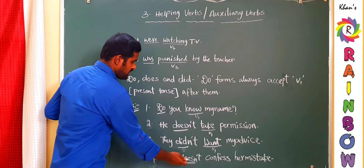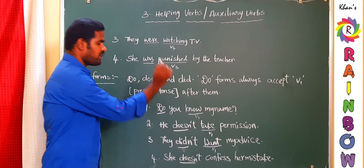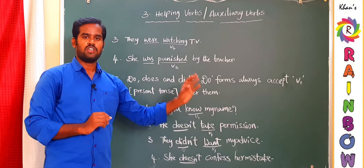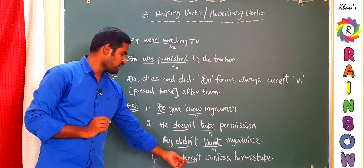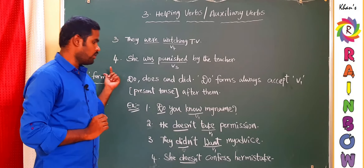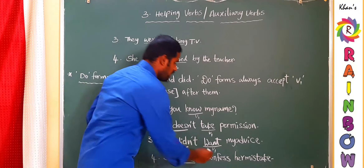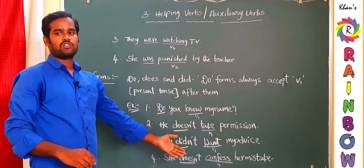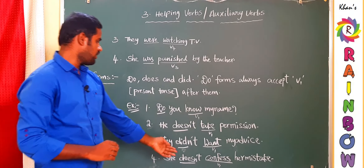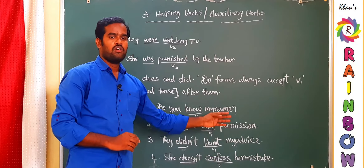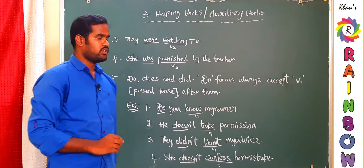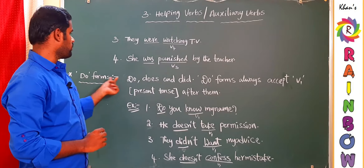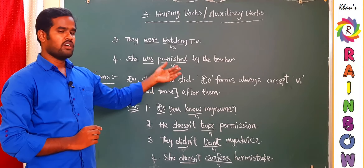In example four, 'does' is used because 'she' is third person singular and the statement is present tense. The verb used is V1, fulfilling the rule. To summarize: the three Do-forms — do, does, did — always accept only V1 after them. That completes the first two types of helping verbs: B-forms and Do-forms.